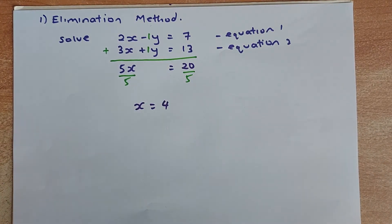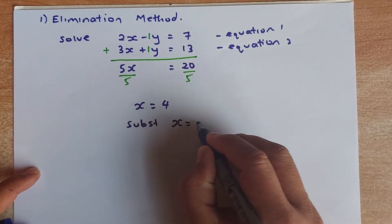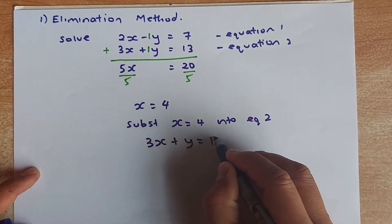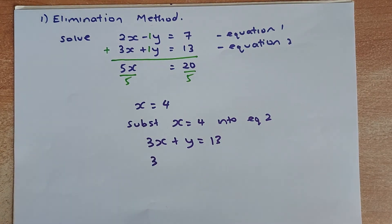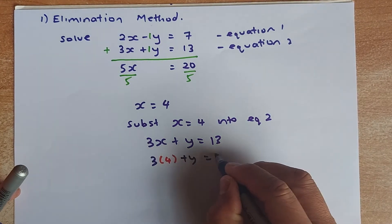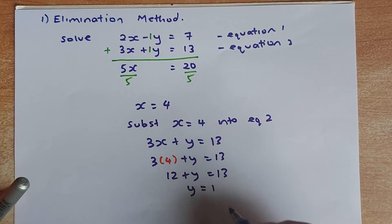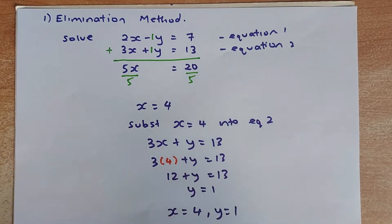That is not all — you have to find Y. To find Y, you need to substitute into either equation 1 or equation 2. We decide to use equation 2 because it seems easier. Substituting X equals 4 into equation 2: 3X plus Y equals 13. You replace X with 4, so 12 plus Y equals 13. Subtract 12 from both sides: Y equals 1. So X equals 4 and Y equals 1 — that is the solution.